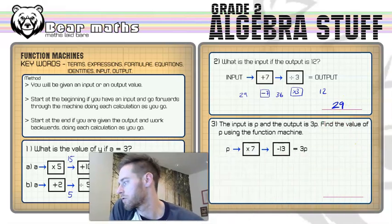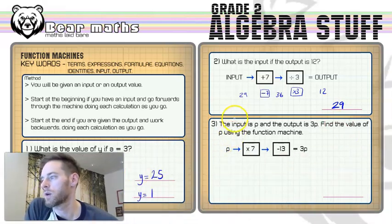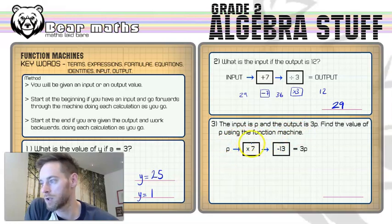Move myself over to the other side of the screen, and you will see the third question. The input is P, and the output is 3P. Now, this is more algebraic, isn't it? We're not dealing with just numbers here. Find the value of P using the function machine. So let's put P into this machine.